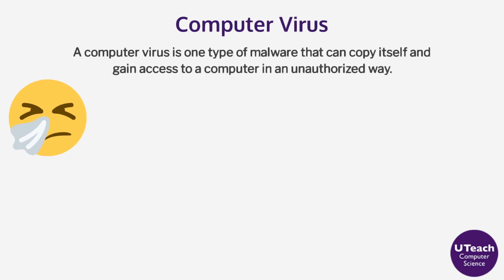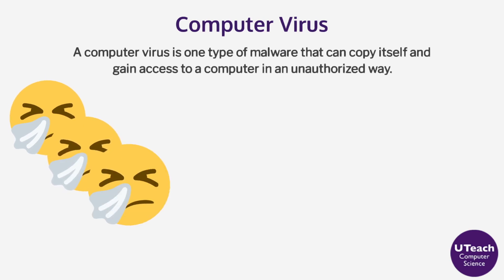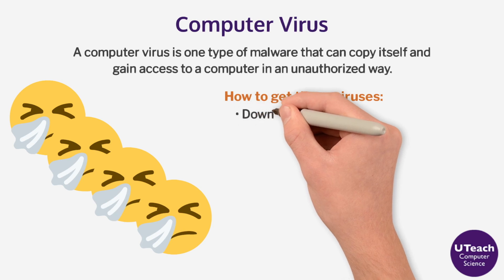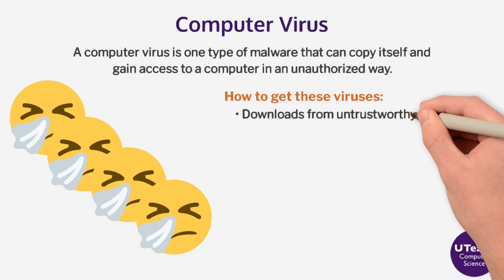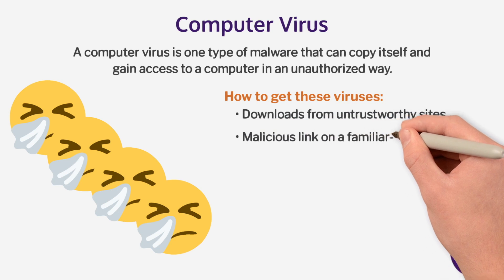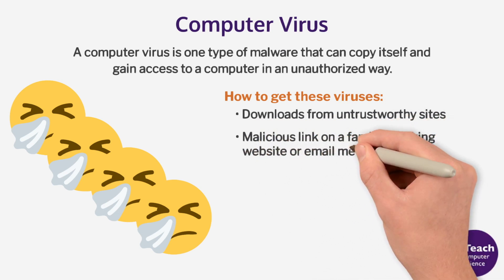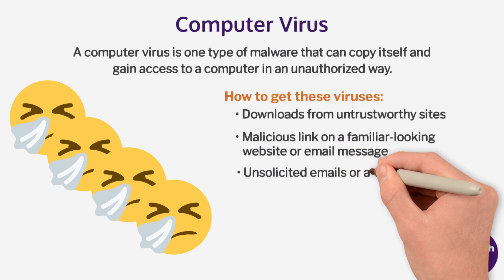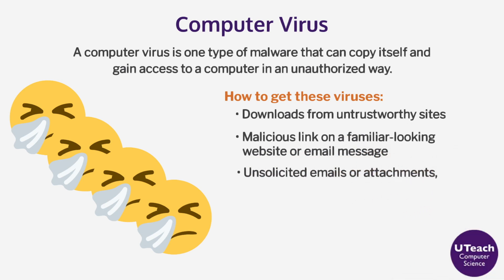A computer virus is one type of malware that can copy itself and gain access to a computer in an unauthorized way. Here's how viruses can be transmitted: downloads from untrustworthy sites, malicious links on a familiar-looking website or email message, unsolicited emails or attachments, links, and forms in emails.